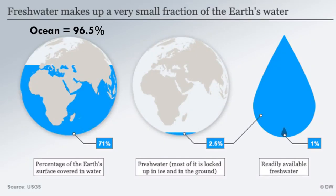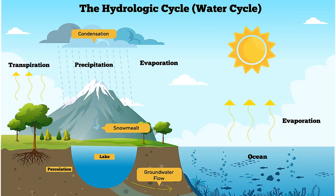The Earth is a watery place. About 71% of the Earth's surface is covered by water, and the oceans hold about 96.5% of all Earth's water. About 2.5% is the fresh water that is mostly locked up in ice and in the ground, and only 1% is the fresh water that is readily available. Water also exists in the air as water vapor, in rivers and lakes, in ice caps and glaciers, and in the ground as soil moisture and in aquifers. Thanks to the water cycle, our planet's water supply is constantly moving from one place to another and from one form to another.